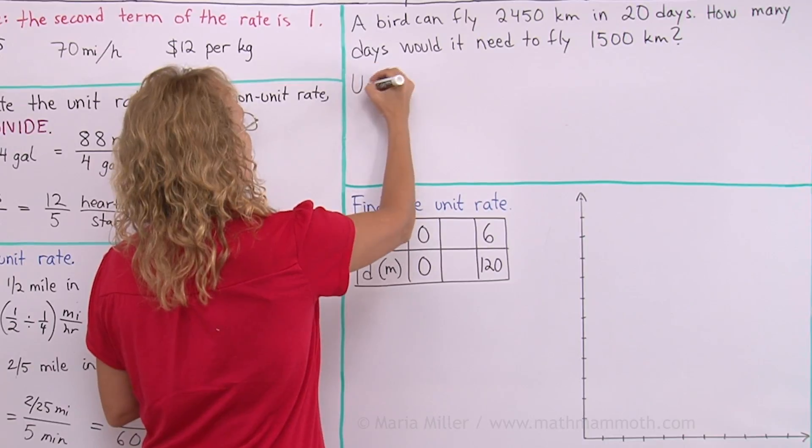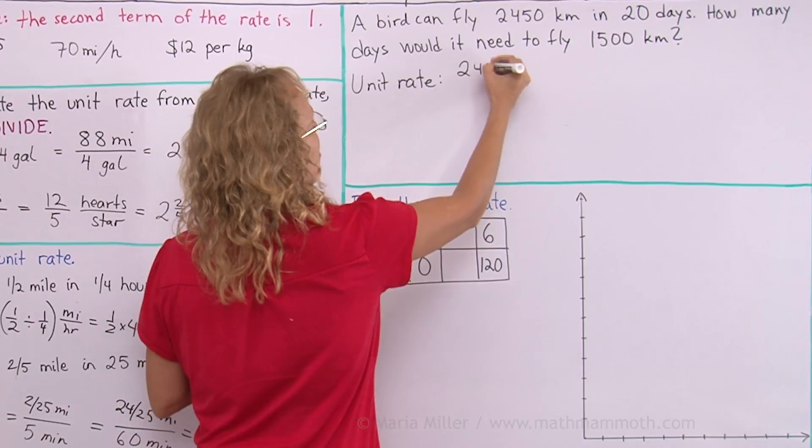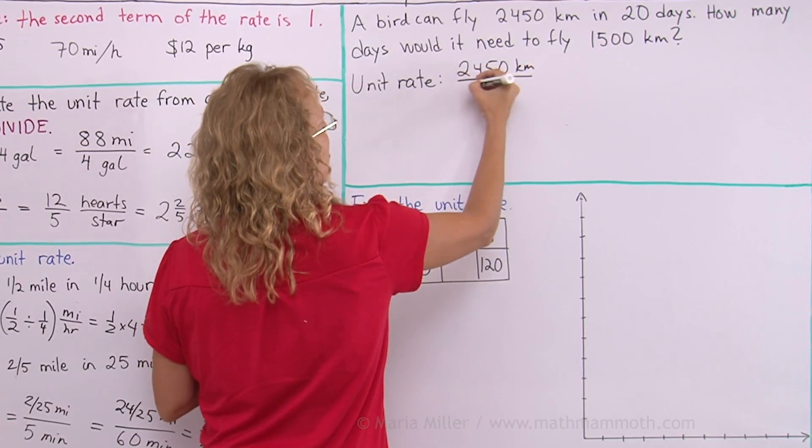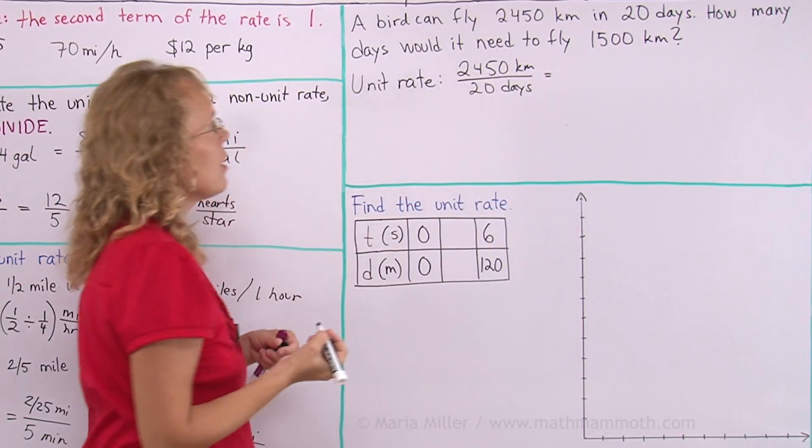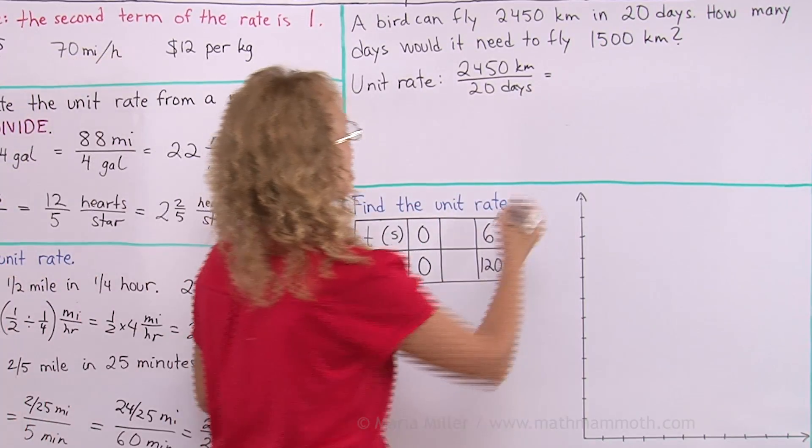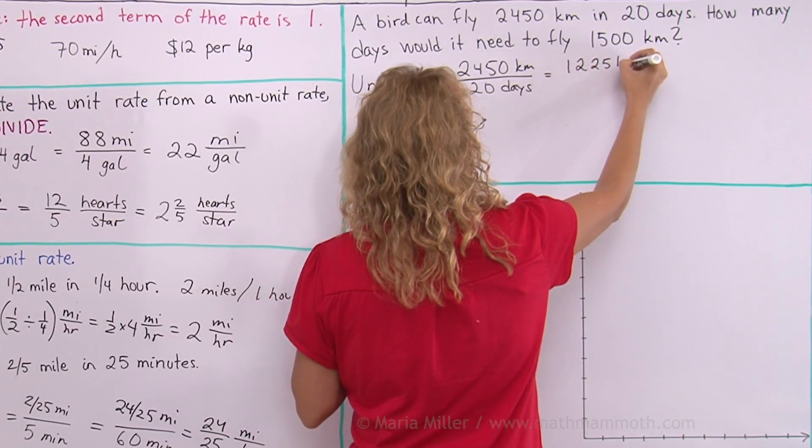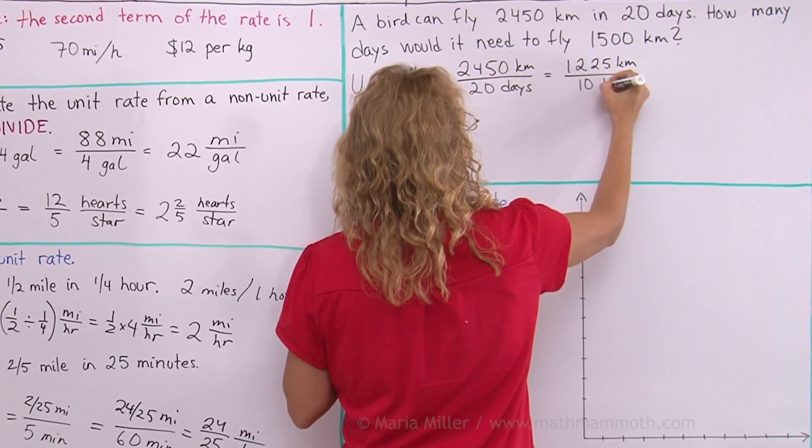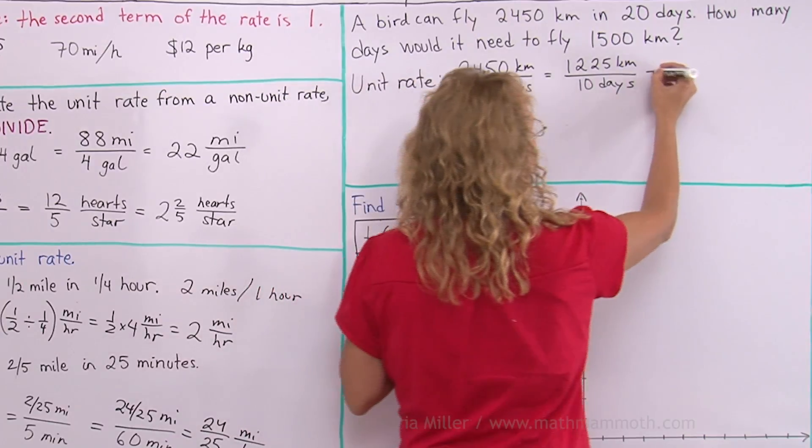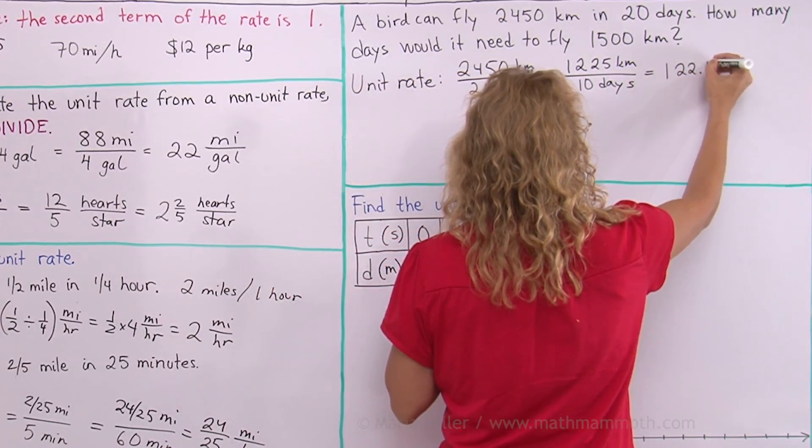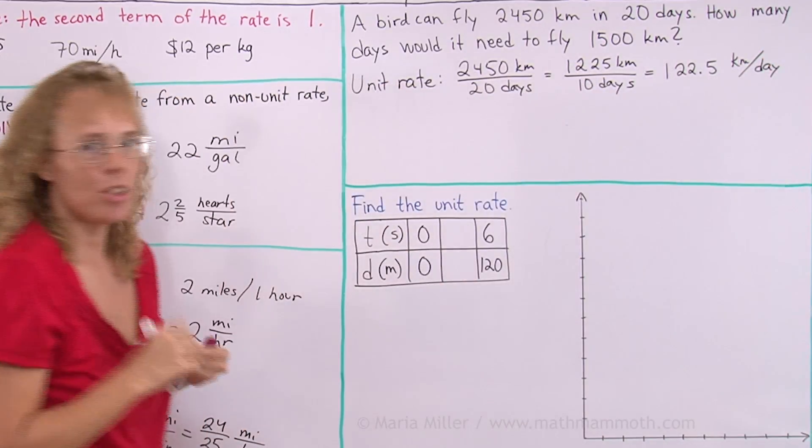So let's say I put here unit rate. 2,450 kilometers per 20 days. I'm going to take half of that first to get 10 days. And that would be 1225 kilometers per 10 days. And then it's easy to divide by 10. It's going to be 122.5 kilometers per day. That's the unit rate.